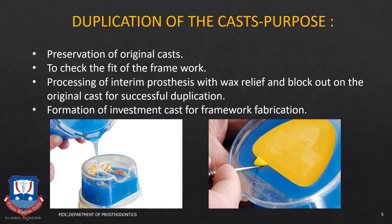Before we go any further, the master cast is duplicated in order to ensure that if there is any damage, the work is not lost. So after surveying of the diagnostic cast and surveying of the master cast, the master cast is duplicated using either a hydrocolloid impression material like agar agar, or using a room temperature vulcanizing silicone also known as RTV silicones. This is then poured in an investment material of choice, usually a type 4 or type 5 investment material.